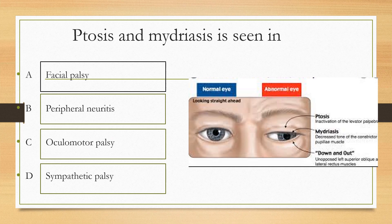Next question. Ptosis and mydriasis is seen in which of the following conditions? Option A facial palsy, option B peripheral neuritis, option C oculomotor palsy, option D sympathetic palsy. The answer is oculomotor palsy, because the third nerve is involved in eyelid elevation and pupillary constriction. So a palsy of the third nerve can cause ptosis and mydriasis.